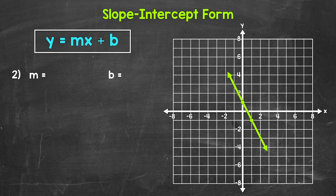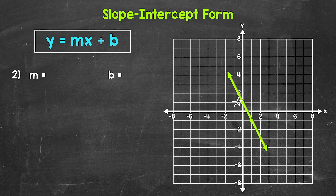Let's move on to number two. Taking a look at number two, let's find our slope and y-intercept. For number one, our line was going upward as it moved from left to right — it had a positive slope. Now for number two, we can see the line is moving downward as it moves from left to right. This line has a negative slope. This line crosses the y-axis at one, so our y-intercept is one.